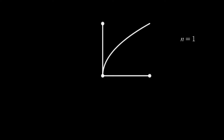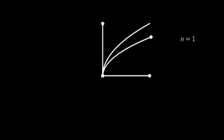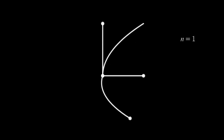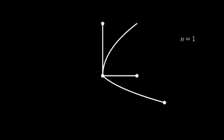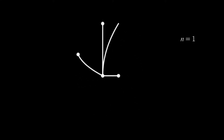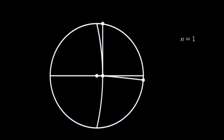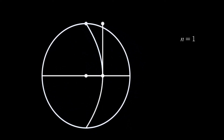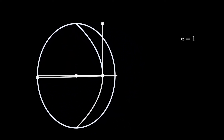Let's say we have a curve with function y equals square root of x, and we're going to look at what happens when it rotates about the x-axis. We're going to rotate the view to have a better understanding. When they rotate, the x-axis acts like the center of rotation, and the motion is eventually a circular motion. If you want to form a solid, it eventually looks like a cone.